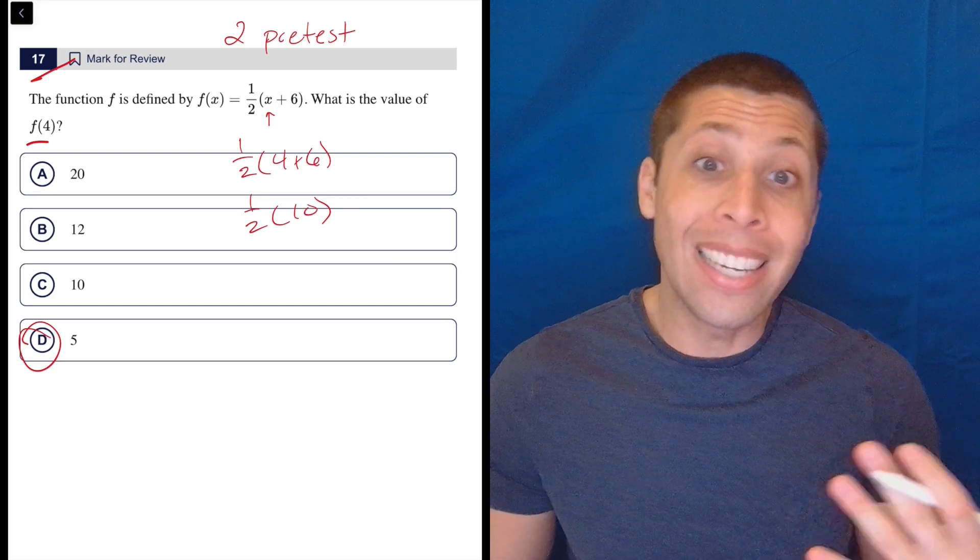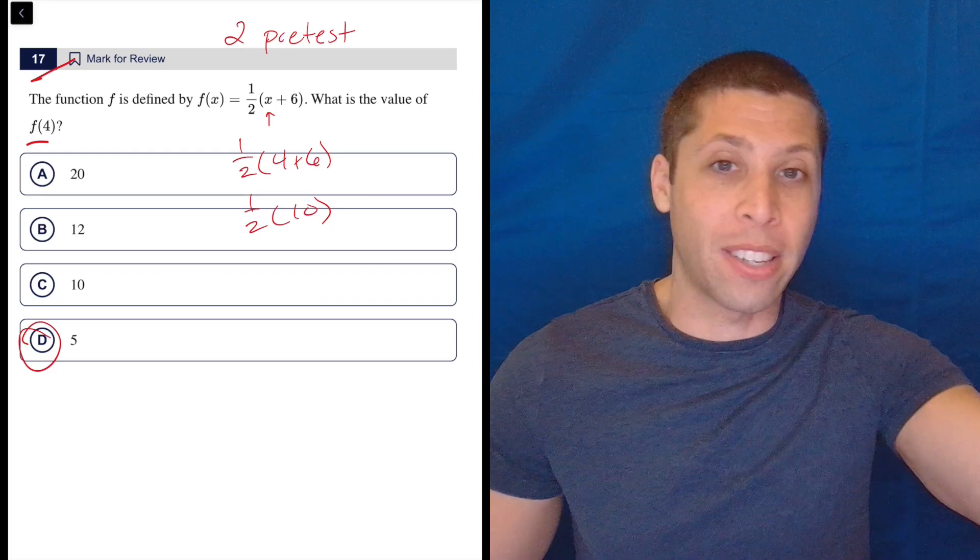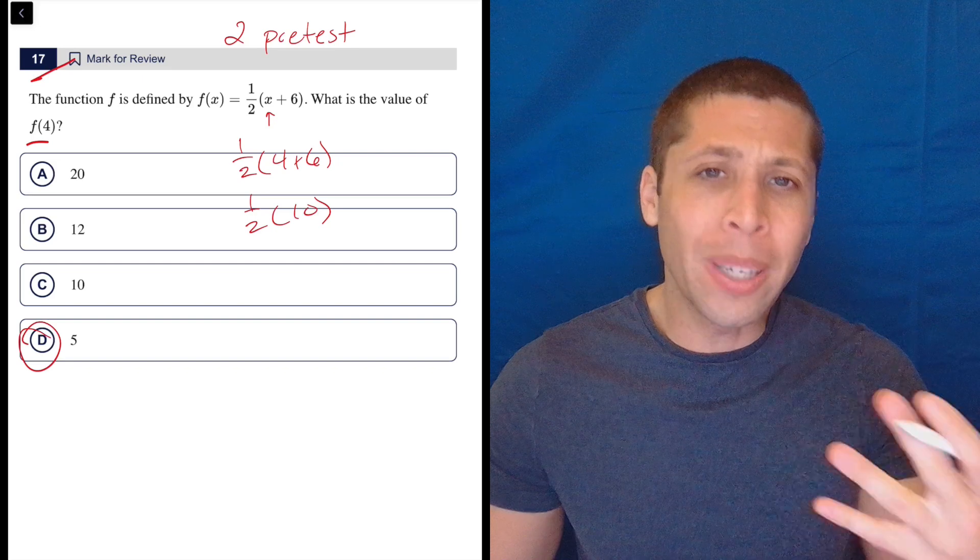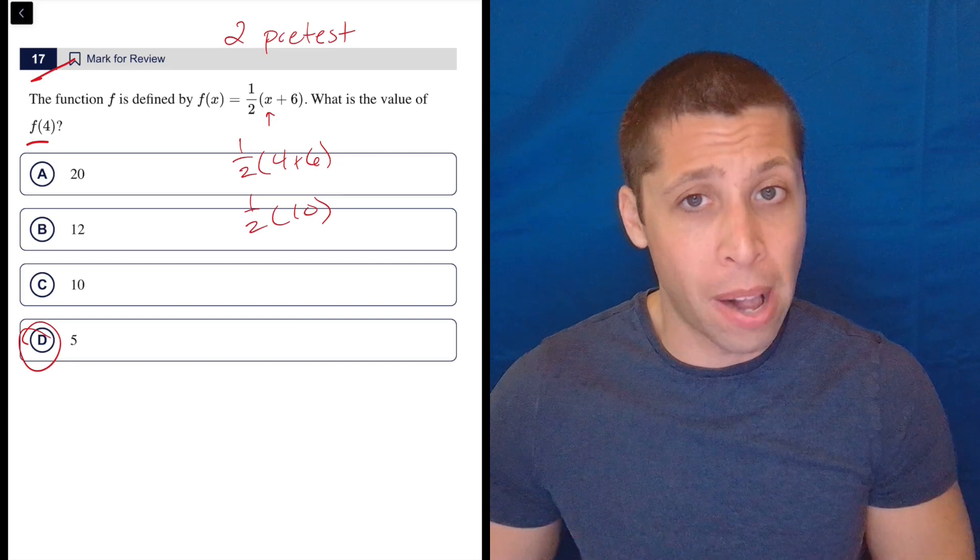Based on whether people are getting it right or wrong, whether this is a question that is easy, is medium, is hard, is too hard, has got some sort of flaw in it. So they're doing experiments on you, basically. And they're doing it with two questions per module.